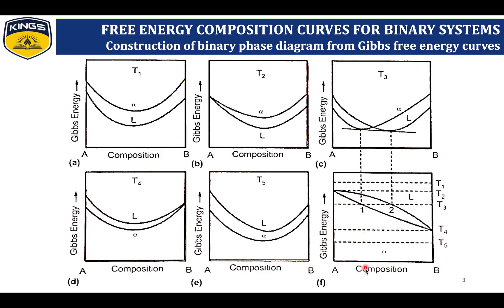The combined diagram is very similar to the tie-line lever rule. By dropping a vertical line we can find the composition, including the liquid and solid compositions. All temperatures — T1, T2, T3, T4, T5 — are noted. At T5 the material is completely solid, and at T1 the material is completely liquid. At T2 the liquid stage ends, and at T4 the solid state begins. At T3 both solid and liquid phases coexist.